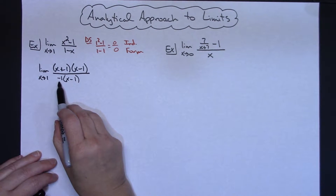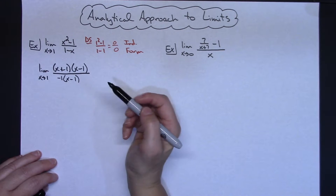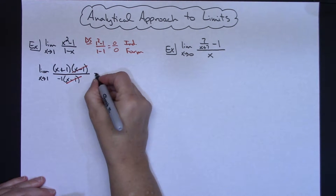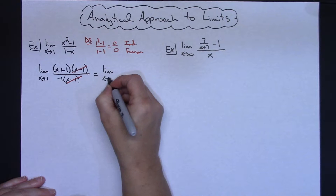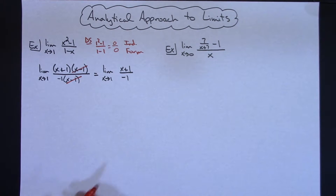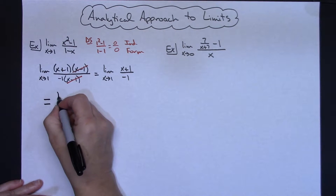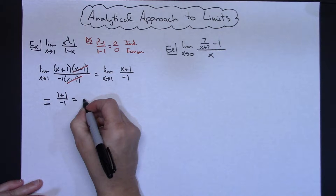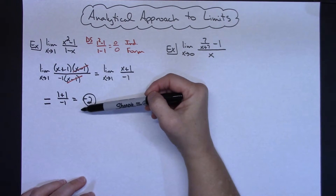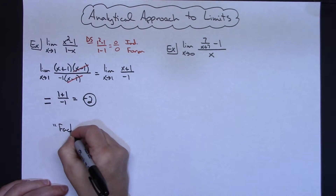To verify: negative 1 times x gives negative x, and negative 1 times negative 1 gives positive 1, so those are equivalent. From there I can cancel the x minus 1 factors, leaving me with the limit as x approaches 1 of x plus 1 over negative 1. Now doing direct substitution of 1 gives me 1 plus 1 over negative 1, which equals negative 2. The algebraic method used here was factoring.